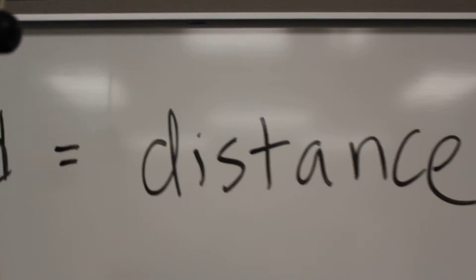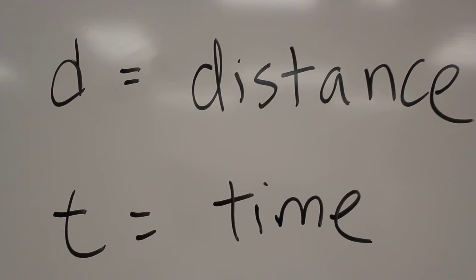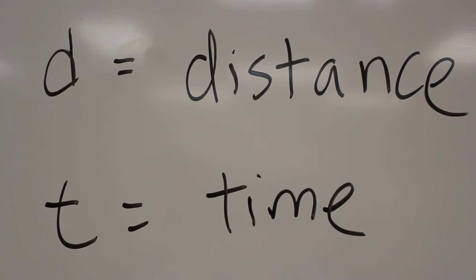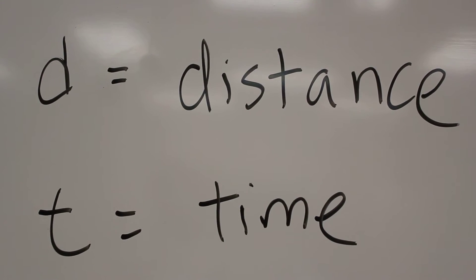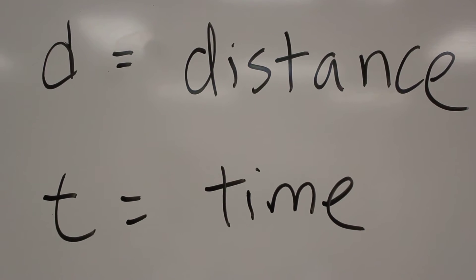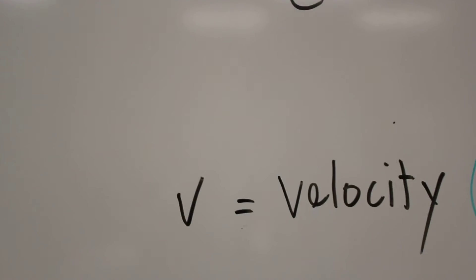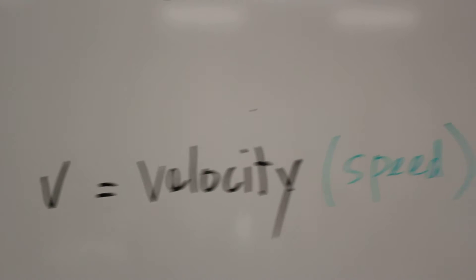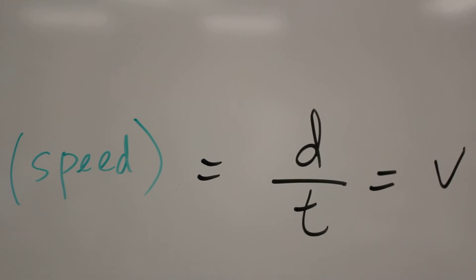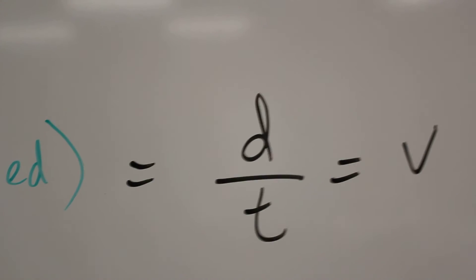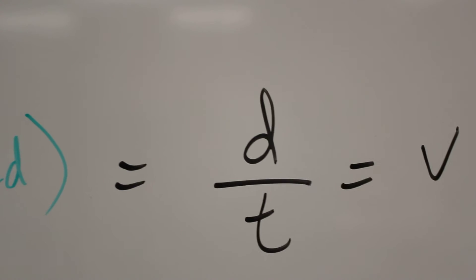Now you know ratios in your everyday life. Here's one: distance over time. You'll walk a certain distance, it takes you a certain time, and that speed is velocity, or speed. It's simply a ratio of how much distance you covered in a certain amount of time.